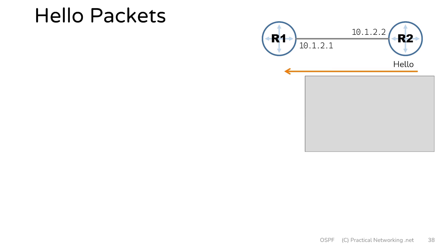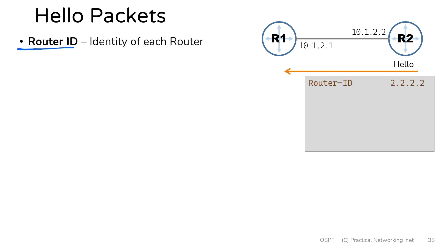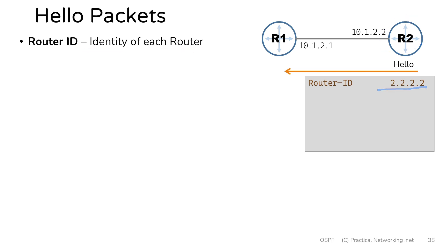The first piece of information inside a hello packet is the router ID. The router ID is the identity of each router. Router 2's router ID is 2.2.2.2. Now that may look like an IP address, but it's not actually an IP address. It's simply a 32-bit value that we represent using dotted decimal because it's familiar to us.